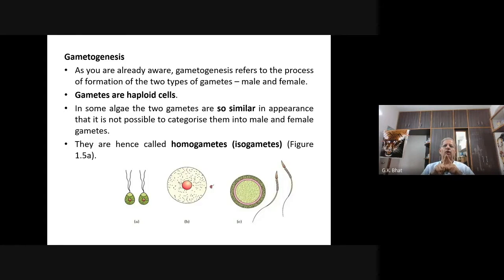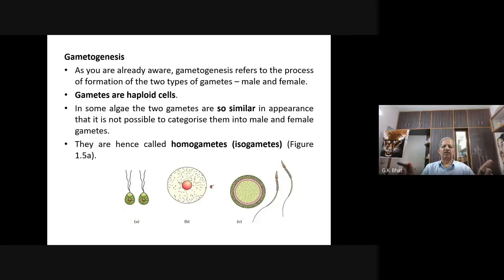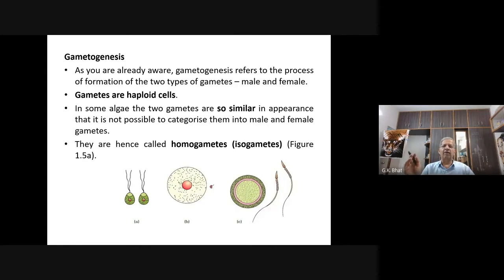Gametes are always haploid cells. If you are asked what is the primary sex organ in case of a human male, you have to tell it is the testis. What is the primary sex organ in case of the female? It is the ovary. So gonads are the primary sex organs. The male sex cell is the male gamete. The female sex cell is the female gamete. Gametes are always haploid cells.